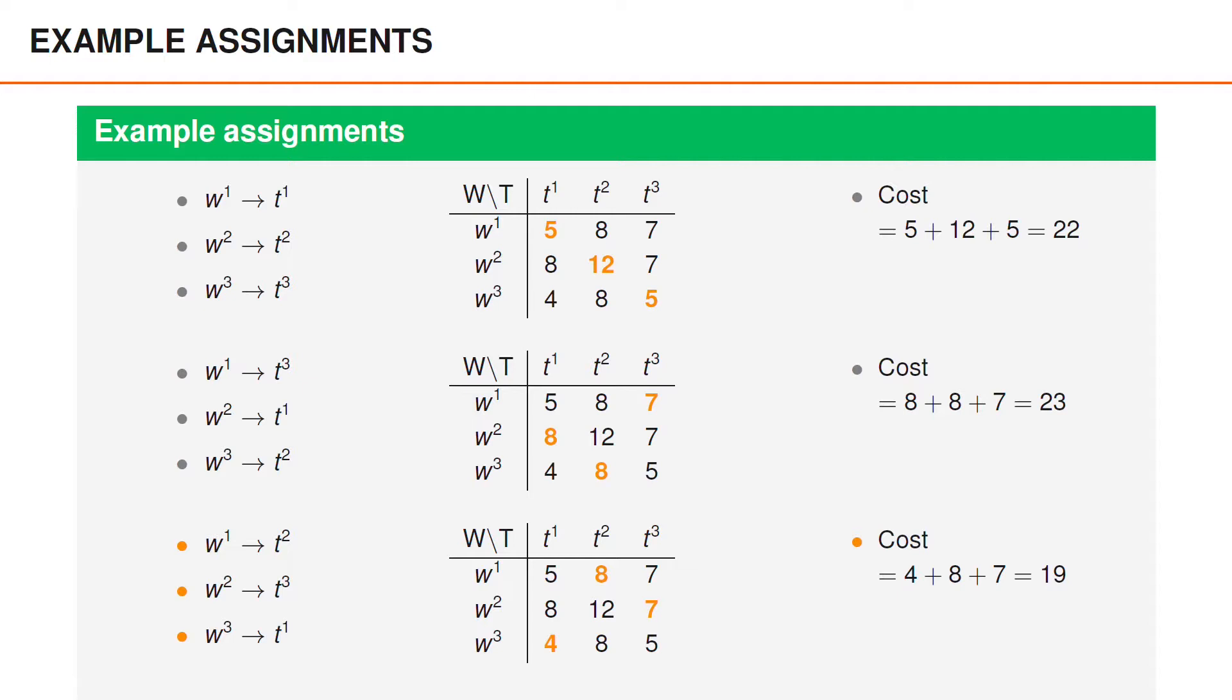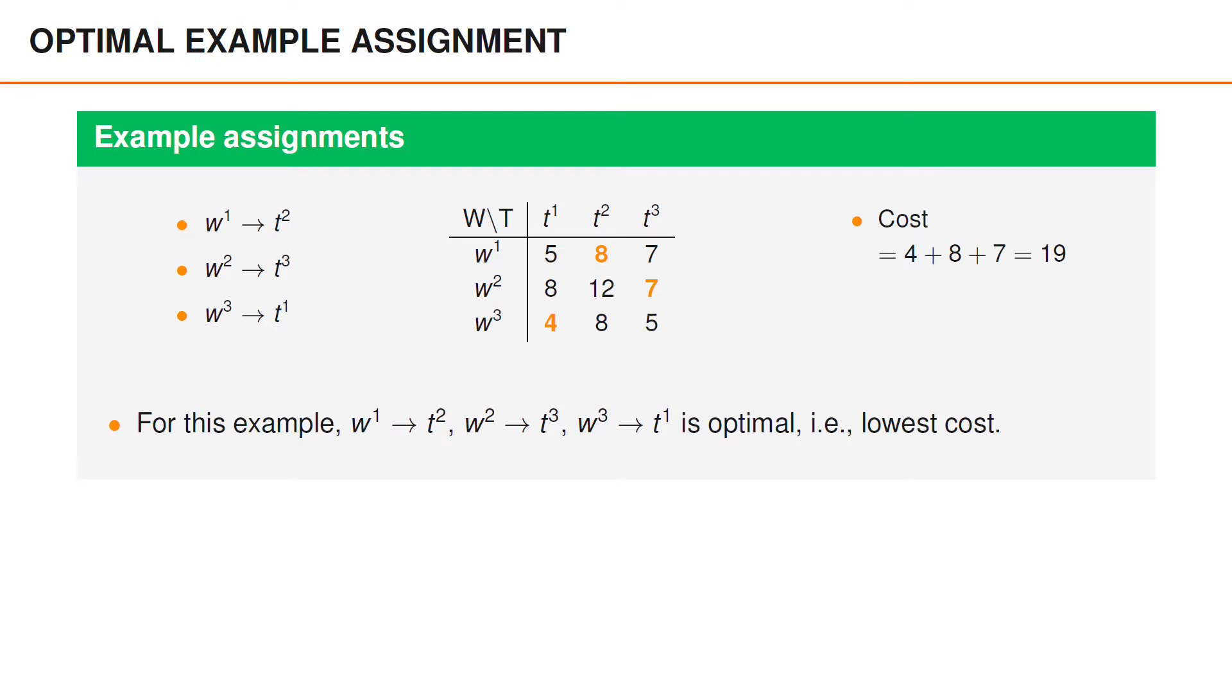Now, for this very small problem, there are so few alternative assignments that we can go through all of them and figure out what the corresponding cost is. And if we do so, it turns out that for this example, the optimal assignment is the one we just had a look at when the cost is 19. So this means that we could not assign the workers and the tasks in a different way and have a lower cost.